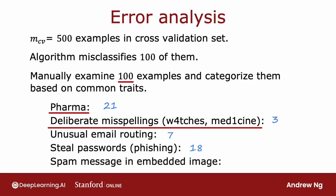Spam is sometimes created by making an image and writing the spam message inside that image, which appears in the email body. This makes it a little harder for a learning algorithm to figure out what's going on, so maybe some of those emails are this embedded image spam.